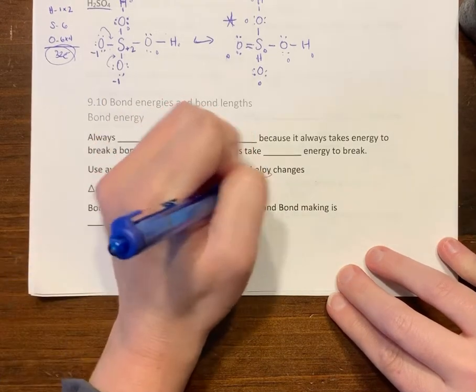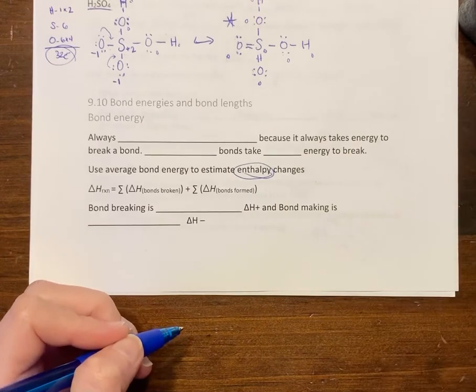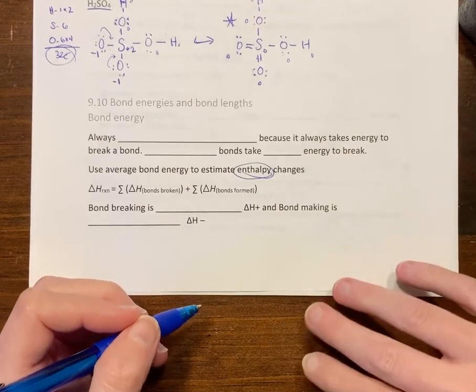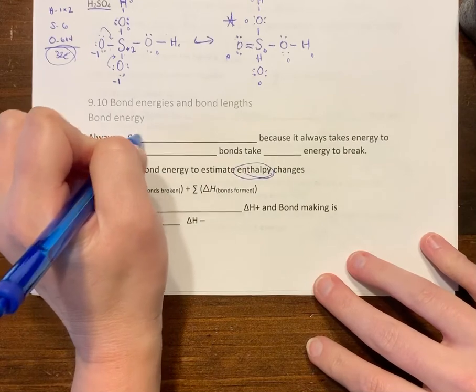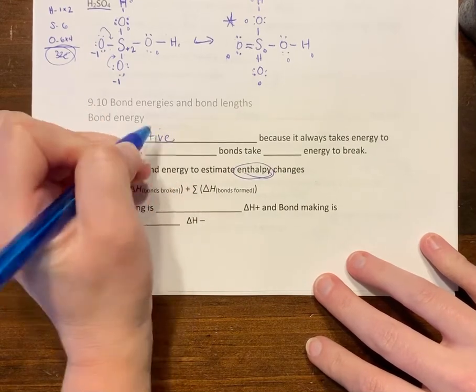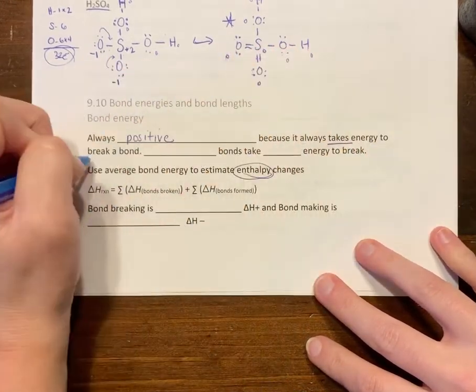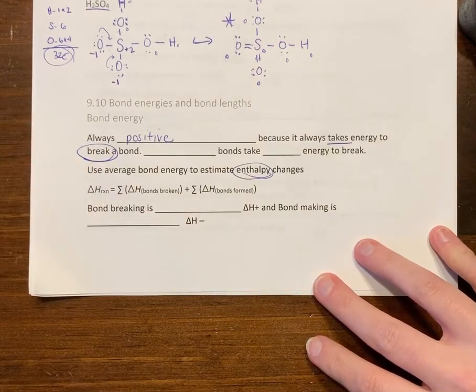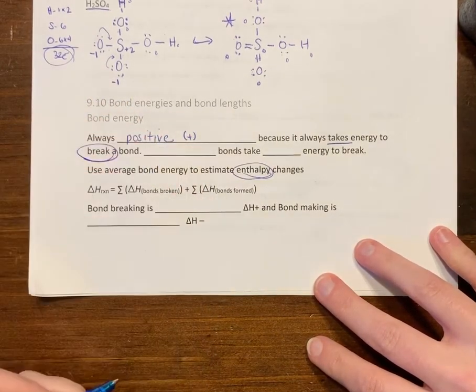Bond energy is always positive because it takes energy to break a bond. So bond energy is always positive.